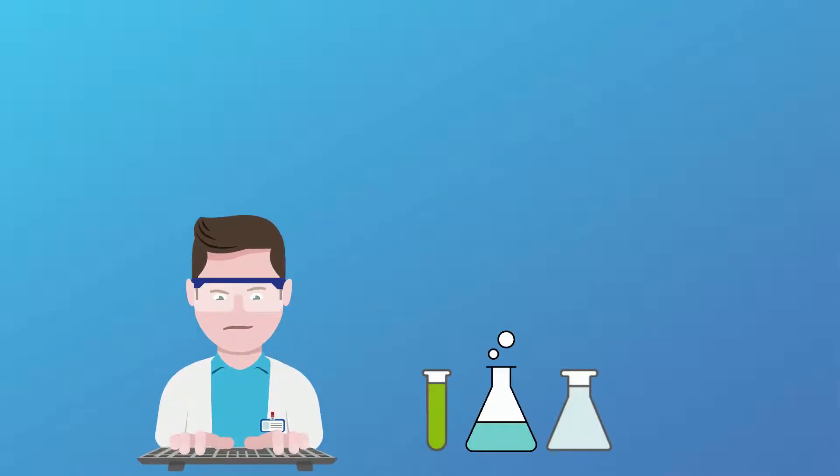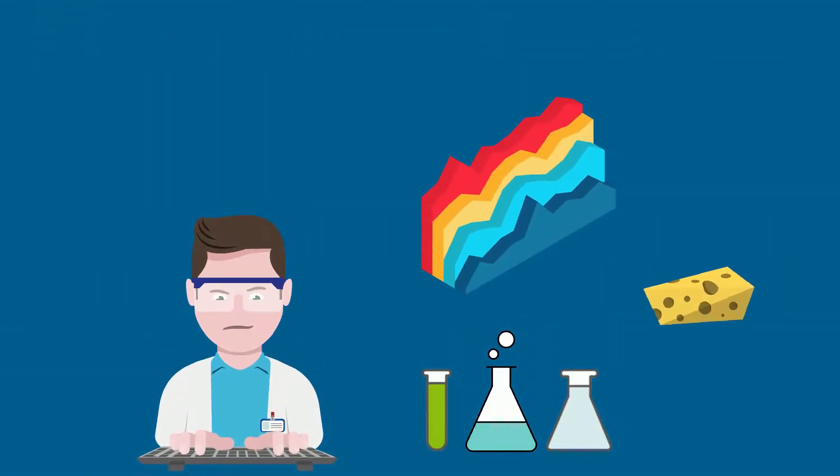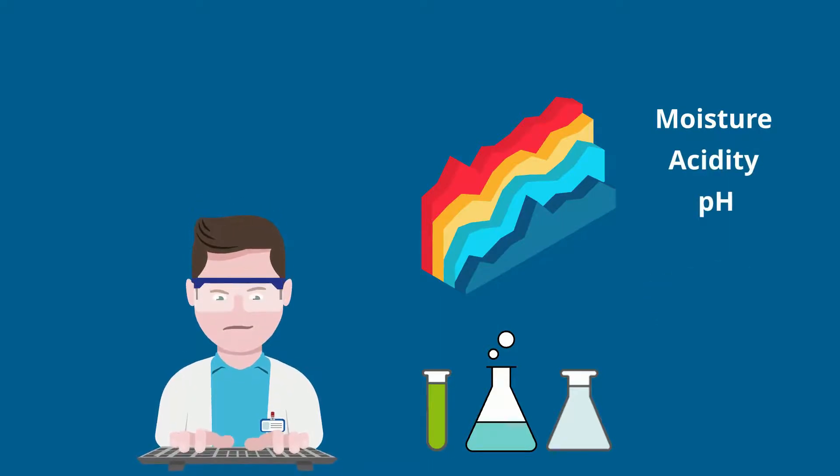The second key area in shelf life testing involves food quality chemistry. These tests help determine the freshness of the product including moisture content, at what point does the product dry out, acidity levels, pH and so on.